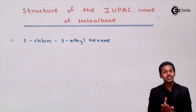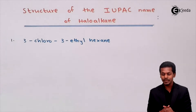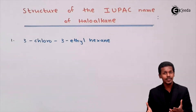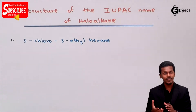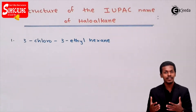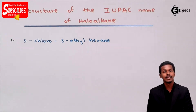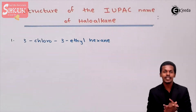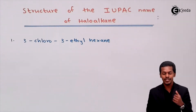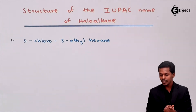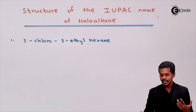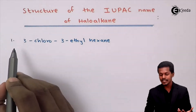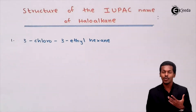We are going to draw the structure from the IUPAC name that has been provided to us, and classify it as primary, secondary, or tertiary. Let us discuss the first example, which is given as 3-chloro-3-ethyl-hexane.